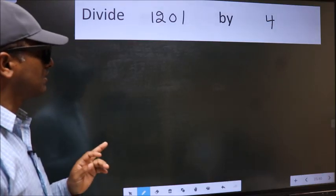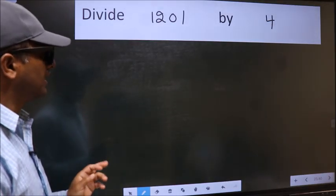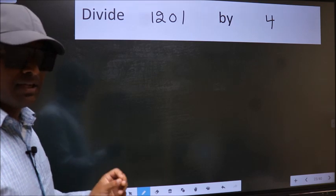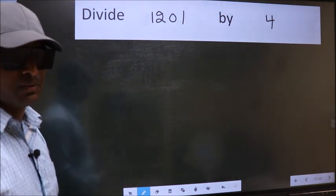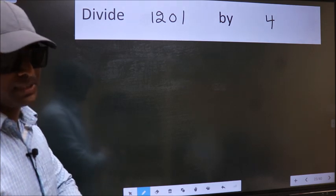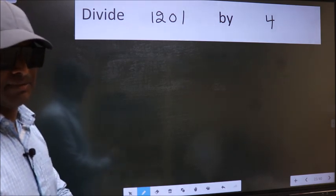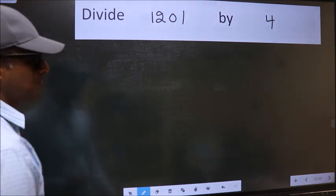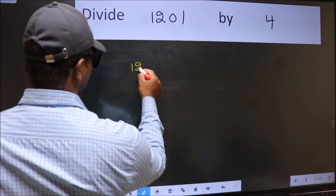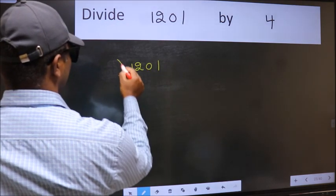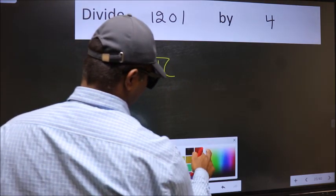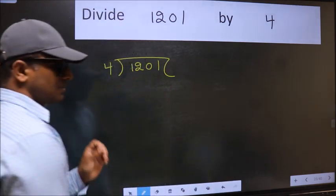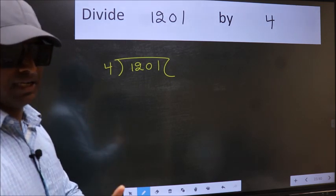Divide 1201 by 4. While doing this division, many do this mistake. What is the mistake that they do? I will let you know. But before that, we should frame it in this way. 1201 and 4 here. This is your step 1.